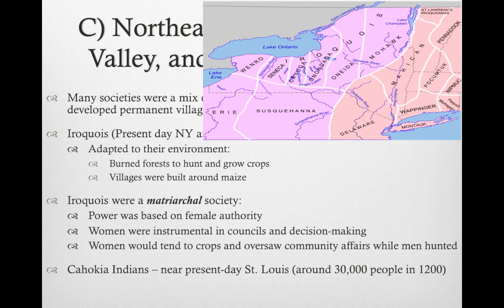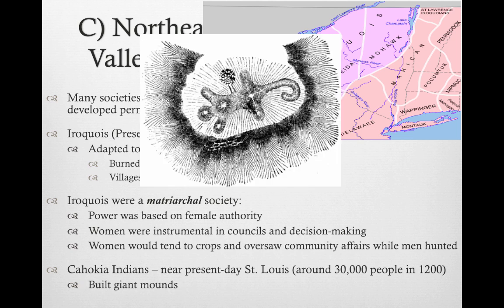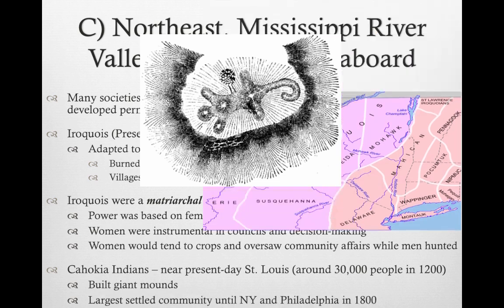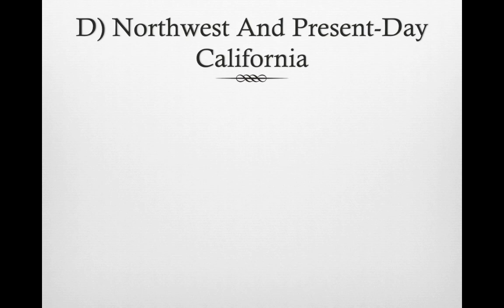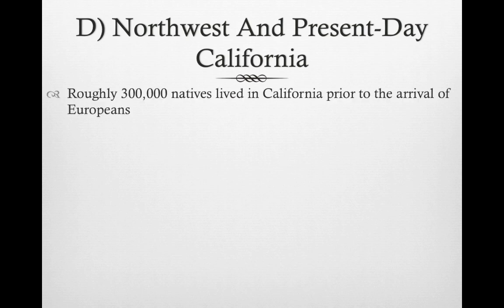The Cahokia Indians, near present-day St. Louis, had around 30,000 people in 1200. They built giant mounds that could be up to about a hundred feet high. This was the largest settled community in present-day America until New York and Philadelphia surpassed them in 1800.